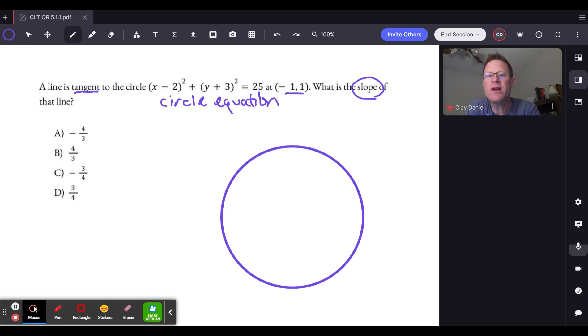And in order to do that, we need to start with this circle equation, which in its pure form is (x minus h) squared plus (y minus k) squared equals r squared, where (h, k) is the center coordinates of the center of the circle and r is the radius.